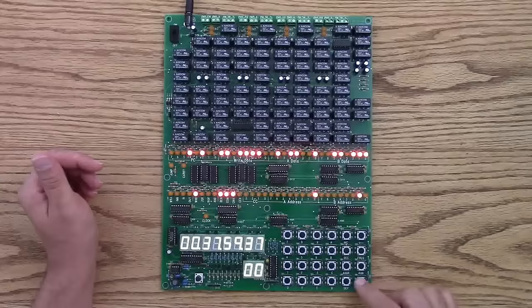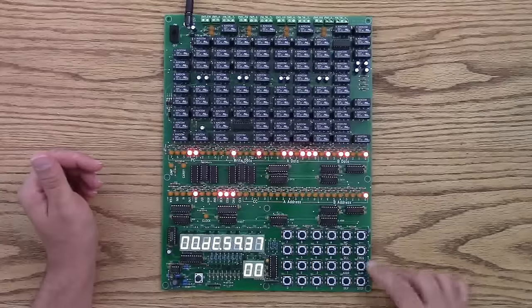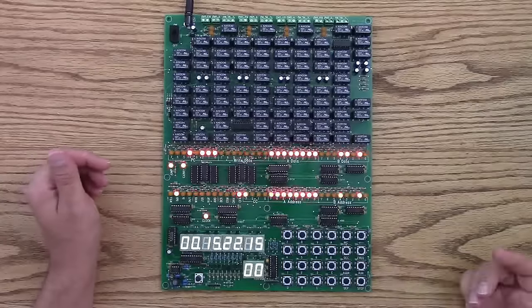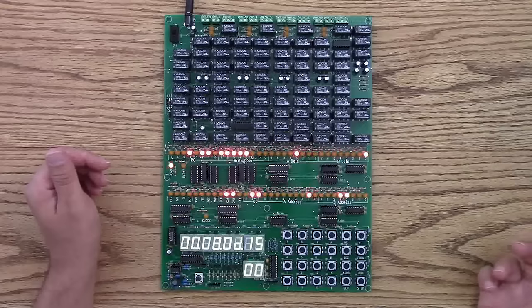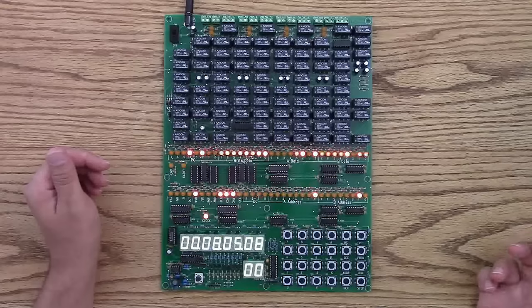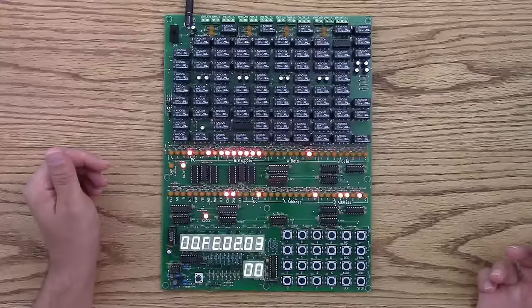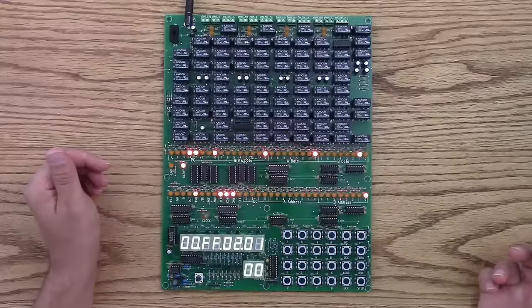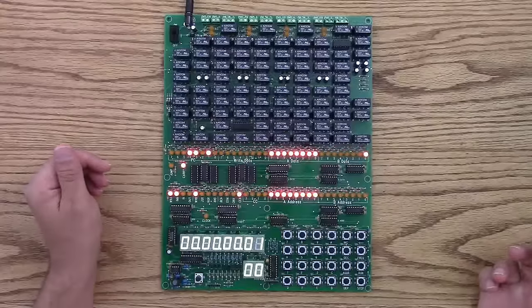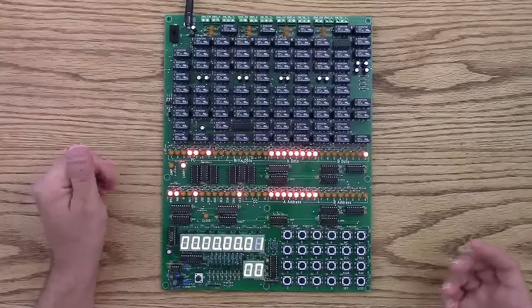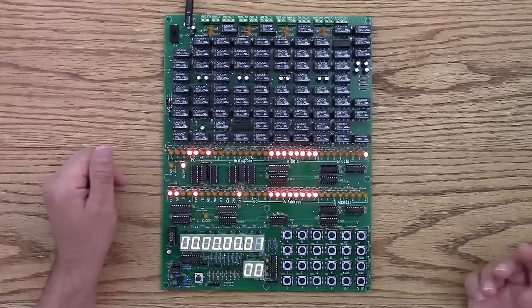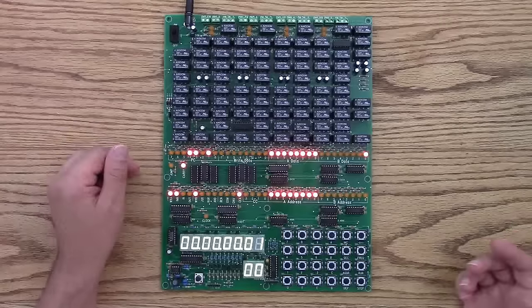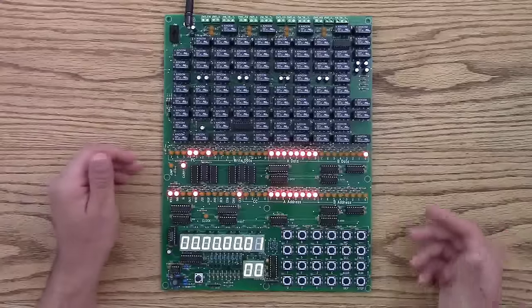Now I can hit the step button and single step through the program, or hit run until it completes. Now completes means that the computer executed the HALT instruction, and HALT stops the clock, and you definitely want to do that because it will preserve the lives of the relays.